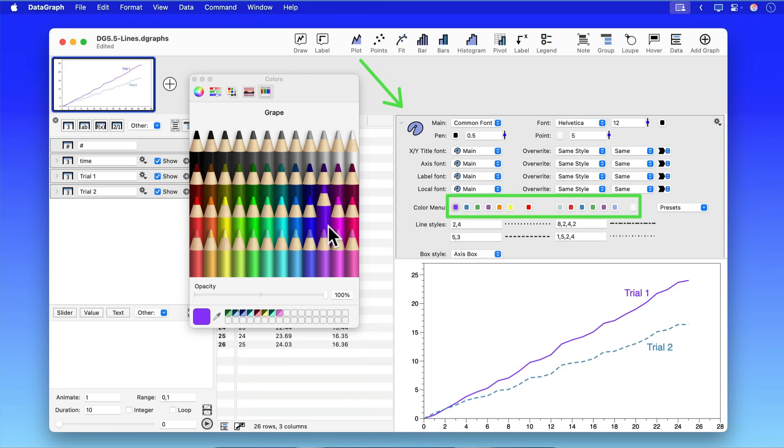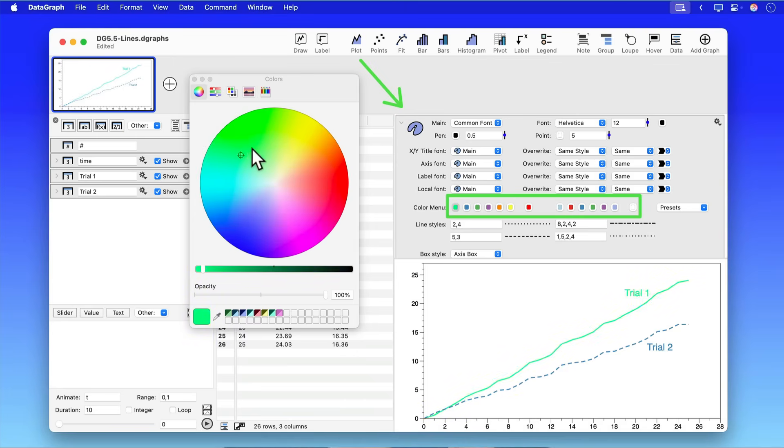So this is a very convenient way to have multiple things set to the same color and to be able to change them all at once instead of multiple places where you have to customize the colors.